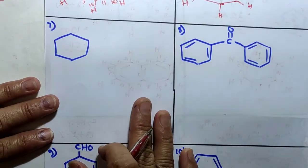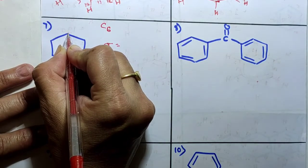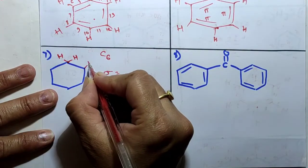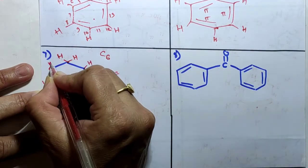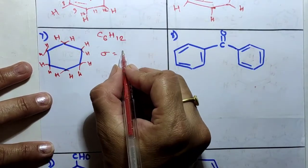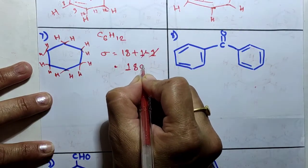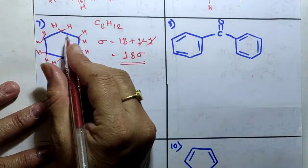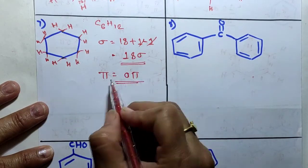Next compound: cyclohexane. Carbon = 6, hydrogen = 12 (C6H12). Total number of atoms = 18. Plus number of rings = 1, minus 1 — they cancel. Therefore 18 sigma bonds. Now calculating pi bonds: cyclohexane has only single bonds, so all bonds are sigma bonds. Therefore it contains 0 pi bonds.